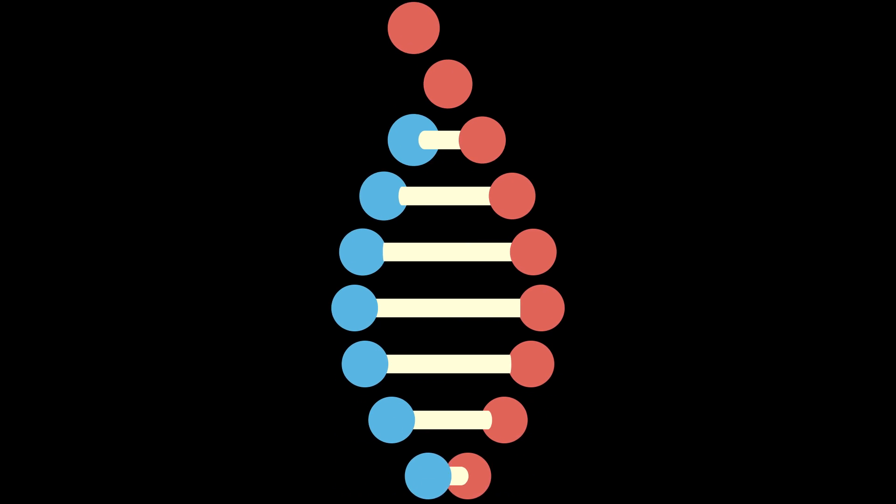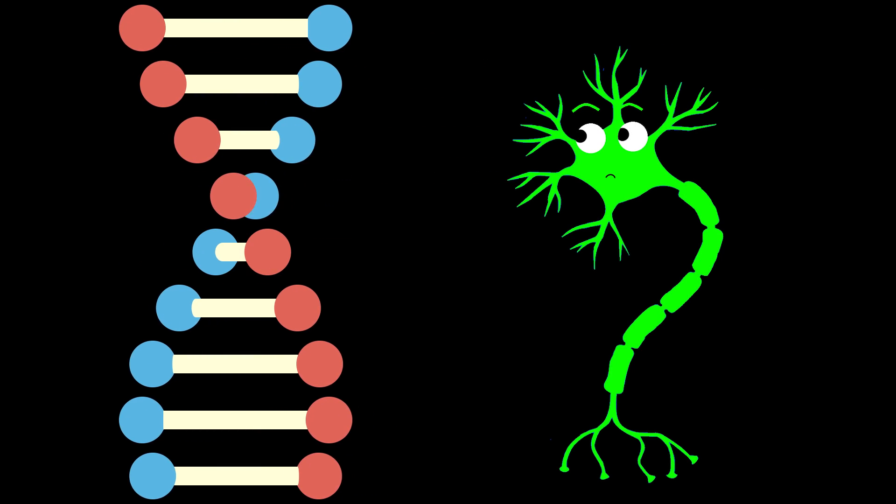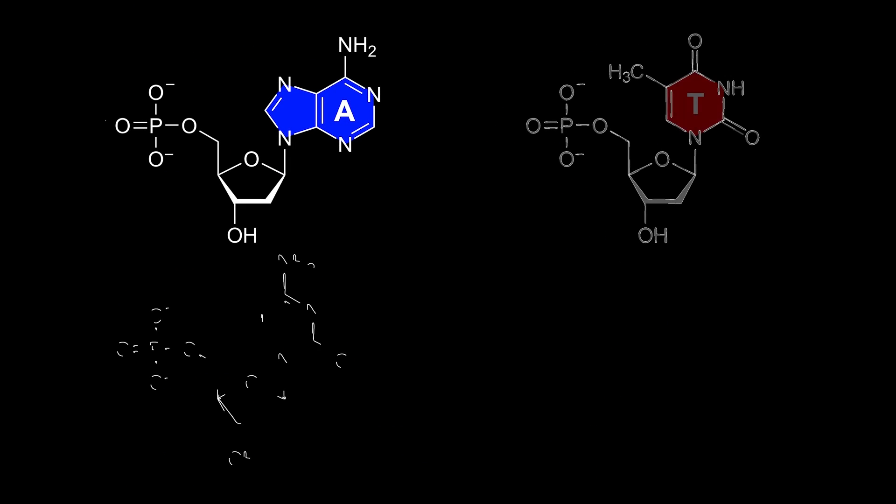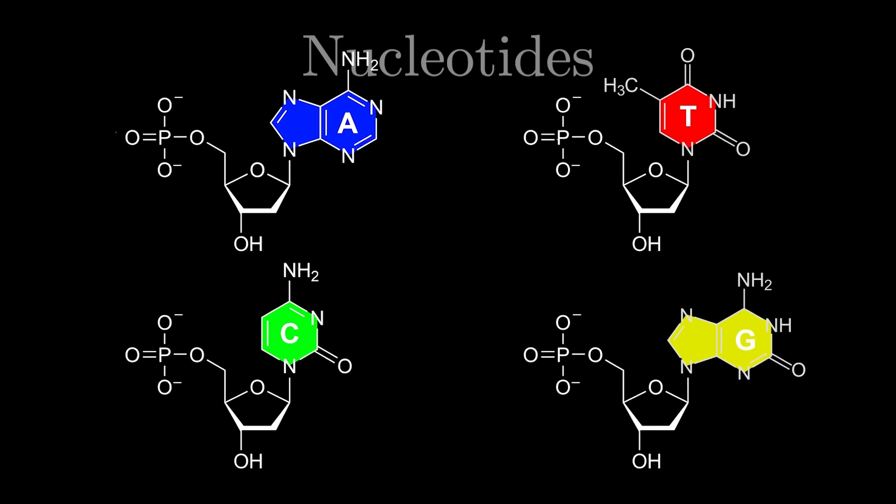This is DNA. But how do we know what it looks like? Well, in 1909, it was discovered that DNA was made up of these small building blocks called nucleotides.